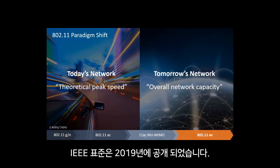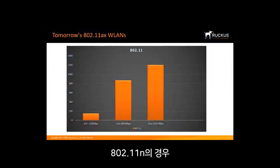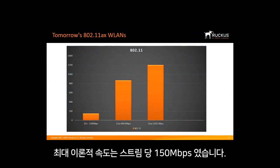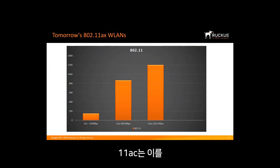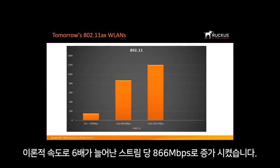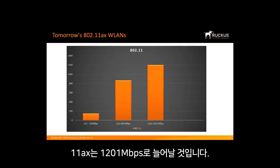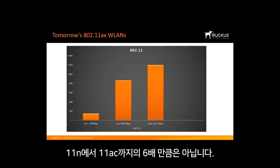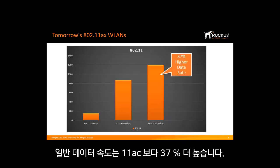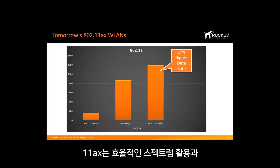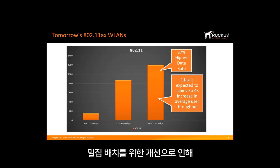The IEEE standard is expected to be publicly released in 2019. For 802.11n, the maximum theoretical speed was 150 Mbps per stream. 11ac increased this to a theoretical speed of 866 Mbps per stream, a over 6-fold increase. 11ax will increase the speed up to 1201 Mbps per stream. Though the nominal data rate is just 37% higher than 11ac, the new amendment is expected to achieve a 4-times increase in average user throughput due to more efficient spectrum utilization and improvements for dense deployments.